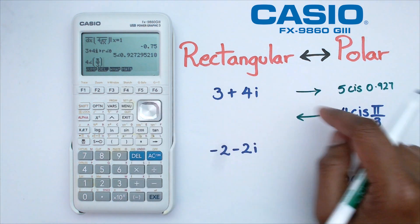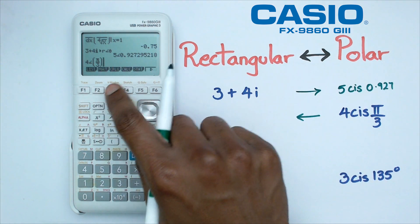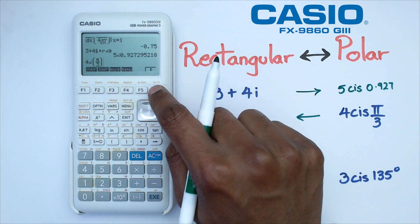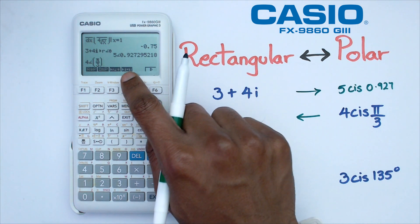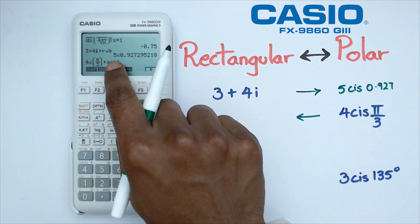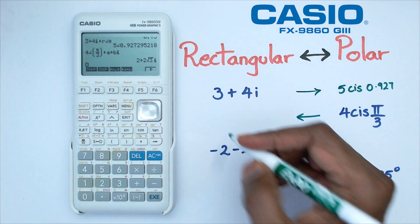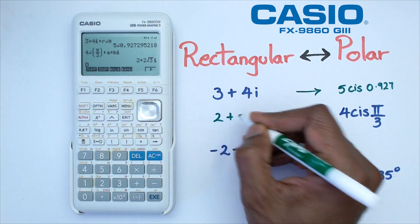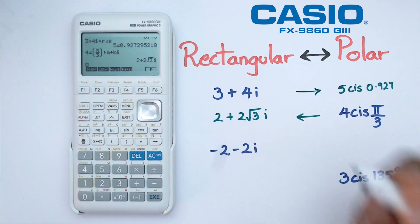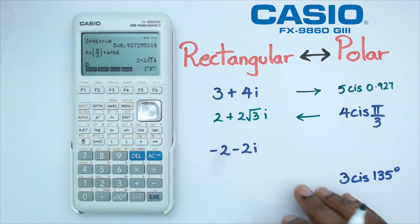So we're going to go back to option, go into complex which is F3, click on F6 to go to the next page, and then we've got a+bi which converts this complex number from polar form to rectangular form. If you press enter we actually get 2 plus 2 root 3 i.